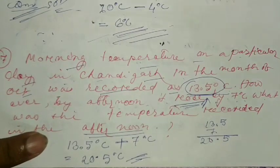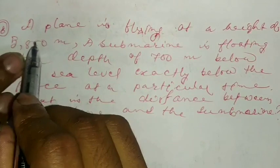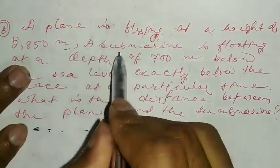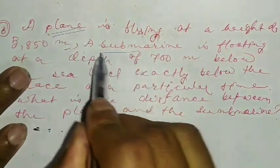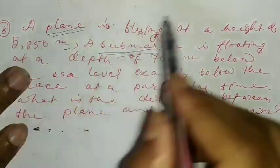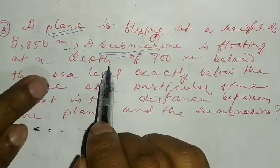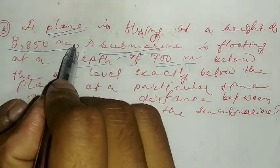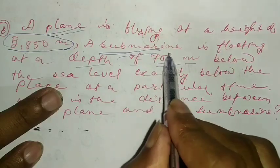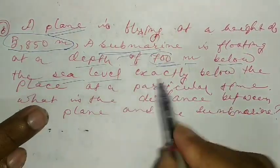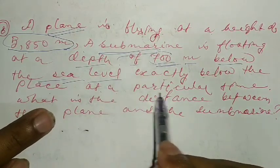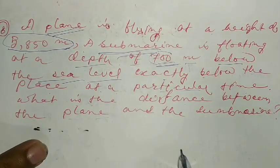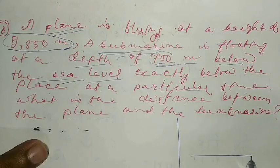Now we move to question number eight. A plane is flying at a height of 5850 meters and a submarine is floating in the sea at a depth of 700 meters. What is the distance between the plane and the submarine at a particular time?